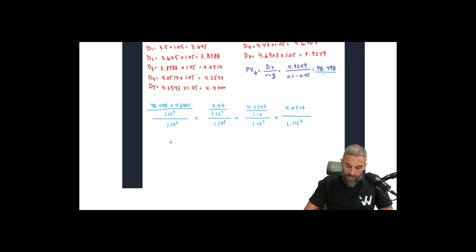The next one, which is D2, 3.8588, will be discounted at 14% two times. And finally, 3.675, that is your D1, will be discounted at 14% only once.